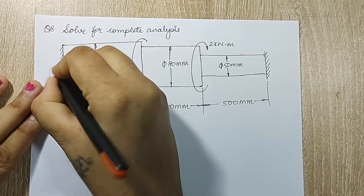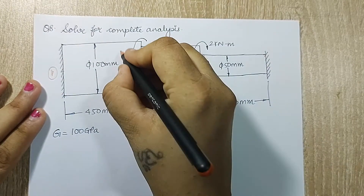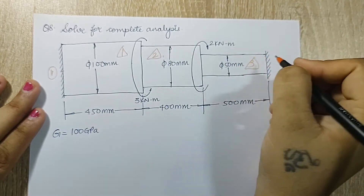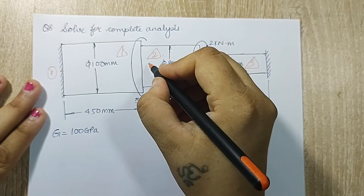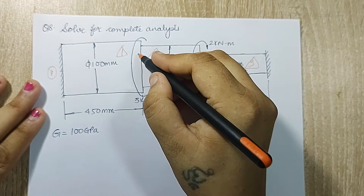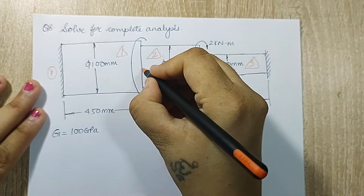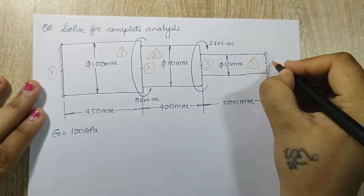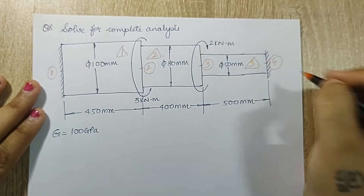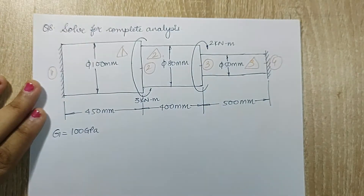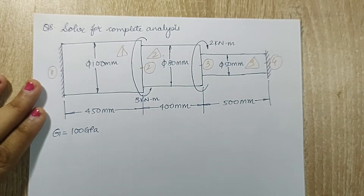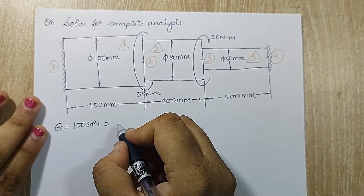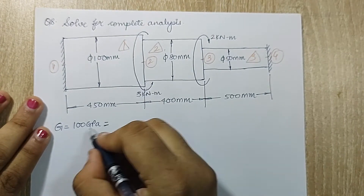I am going to mark the elements first: 1, 2, 3. There should be a node at this end. There will be a node here because there is a sudden moment applied and a change in cross-section, so second node. The same rule applies for the third node, and at the end point there is the fourth node. The length and other dimensions are given, and G is given as 100 gigapascal - that is the modulus of rigidity.